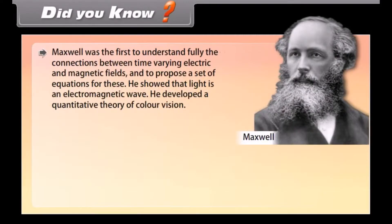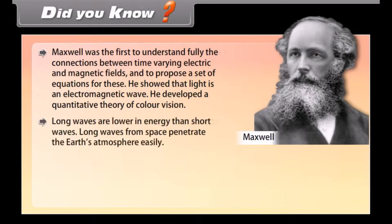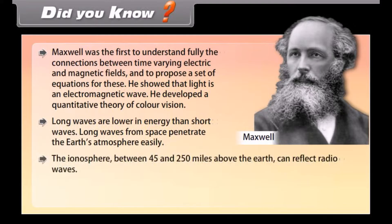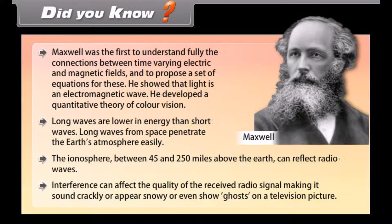Did you know? Maxwell was the first to fully understand the connections between time-varying electric and magnetic fields and to propose a set of equations for these — he showed that light is an electromagnetic wave. He also developed a quantitative theory of color vision. Long waves are lower in energy than short waves, and long waves from space penetrate Earth's atmosphere easily. The ionosphere, between 45 and 250 miles above the Earth, can reflect radio waves. Interference can affect the quality of the received radio signal, making it sound crackly or appear snowy or show ghosts on a television picture.